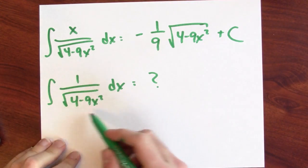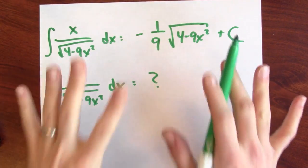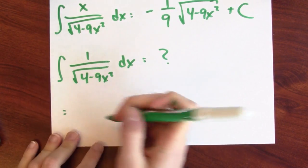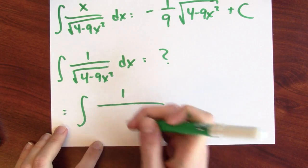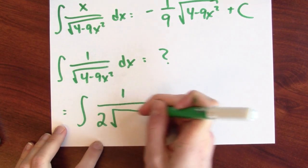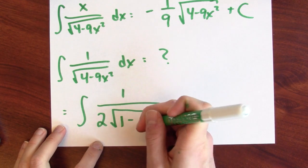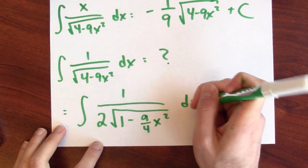Well, I could try to factor out a 2 from the denominator here. I mean, I'm not going to make a substitution yet. I'm just going to try to rewrite the integrand. So if I factor out a 2, this is the anti-derivative of 1 over 2 times the square root of 1 minus 9 over 4 x squared dx.